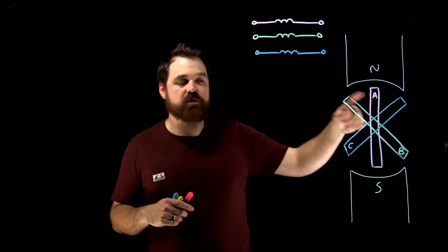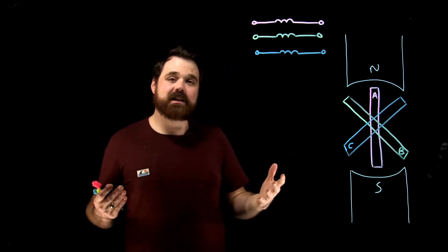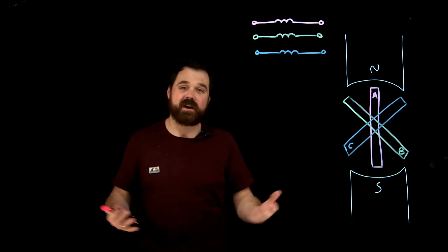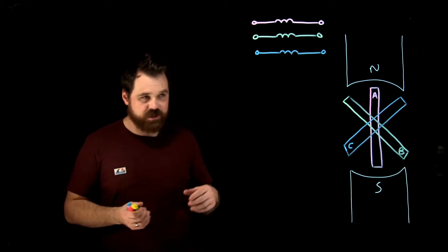And then when we rotate those through that magnetic field, we generate our three-phase sine wave, which is also going to see our sine waves 120 electrical degrees apart. So that's how three-phase generation works.